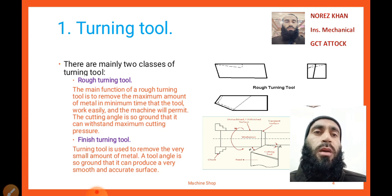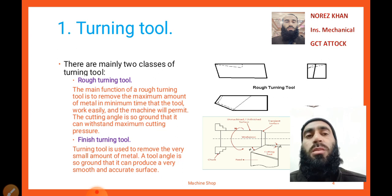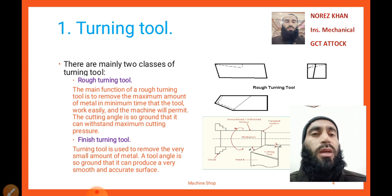The main function of a rough turning tool is to remove the maximum amount of metal in minimum time that the tool, work, and machine will permit. The cutting angle is so ground that it can withstand maximum cutting pressure. A finished turning tool is used to remove a very small amount of metal, and the tool angle is so ground that it can produce a very smooth and accurate surface.